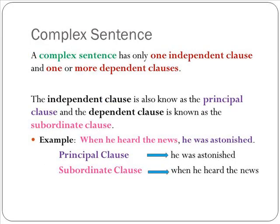Now it is time to cover our third sentence type. A complex sentence has only one independent clause and one or more dependent clauses. The independent clause is also known as the principal clause, and the dependent clause is known as the subordinate clause. Let's check out our example: When he heard the news, he was astonished. The principal clause is "he was astonished." The subordinate clause is "when he heard the news" — it does not make sense as its own sentence.